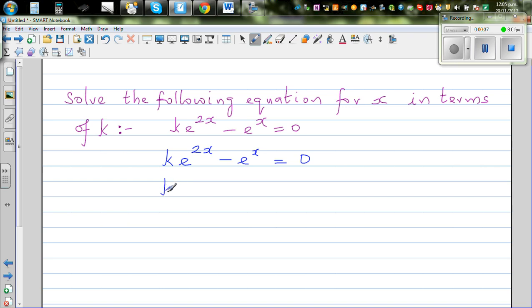Can I write this like this? k times e to the power x squared, using the rules of indices, minus e to the power x equals 0.